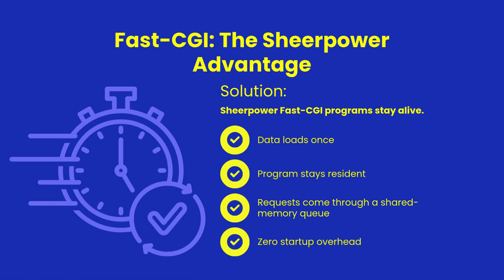Shear Power solves this by running your program once and keeping it alive indefinitely. Spin's web server funnels all incoming requests into a shared memory queue, and your FastCGI program pulls them off one at a time. Your data stays warm in memory, your clusters stay allocated, and your handler responds instantly. This is exactly how high-performance, real-time services should behave.